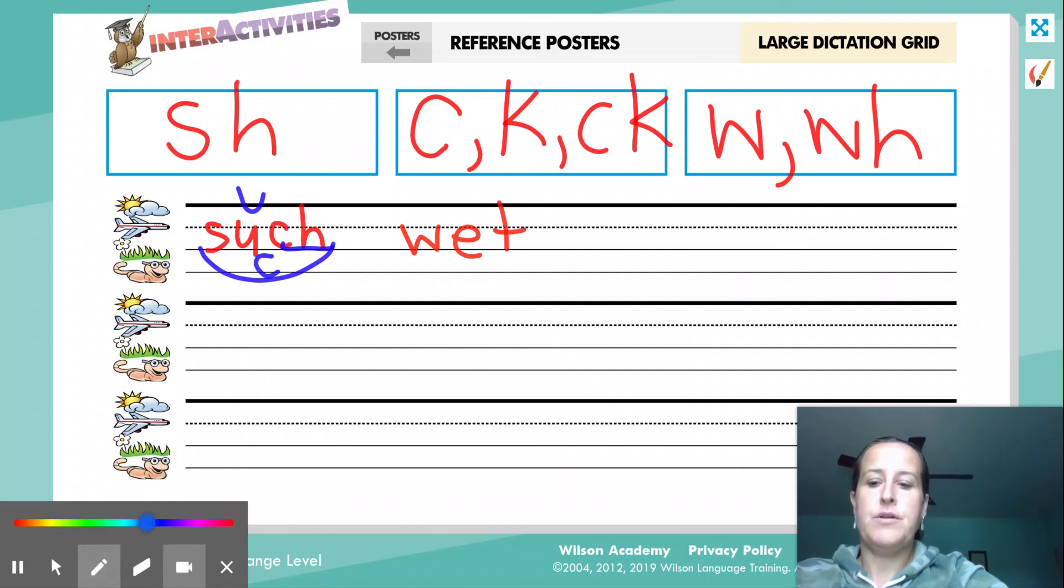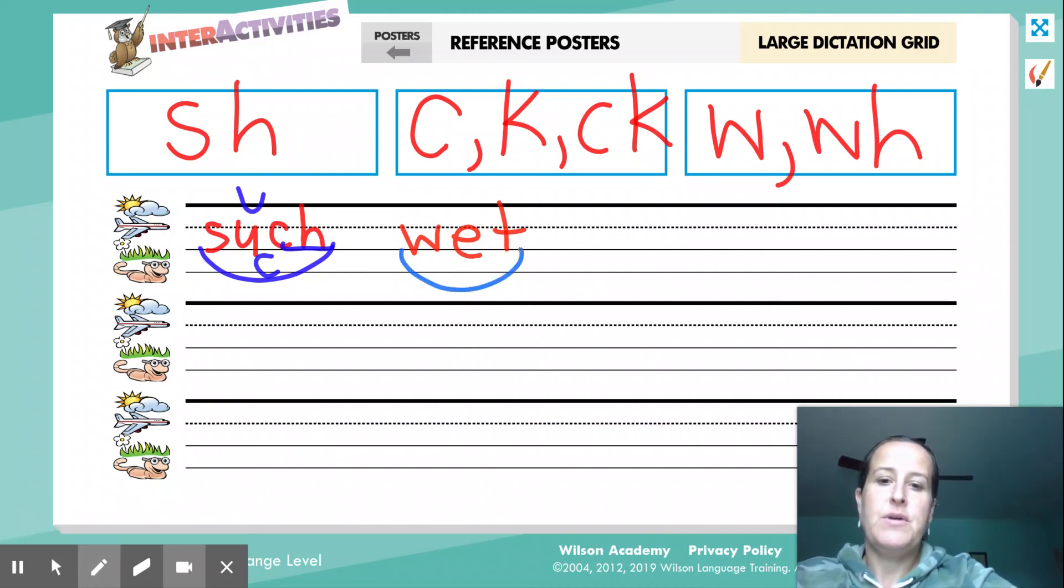Okay, now what you're going to do is you're going to mark up the word wet. What can we do first? That's right, we can scoop it. We can put a C underneath because it's a closed syllable, and we can put a breve on top because the E says eh, and the E is closed in by that T. Good job.